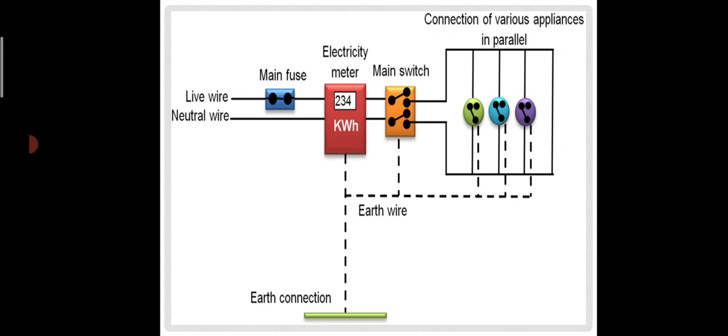You can see on your screens the live wire and the neutral wire, which is denoted by capital N. This is the main fuse, and this is the electricity meter. You can also see the main switches and the connections of the various appliances in the parallel circuit.